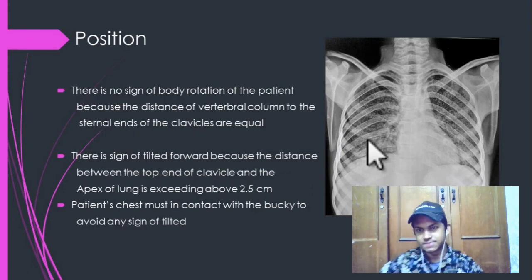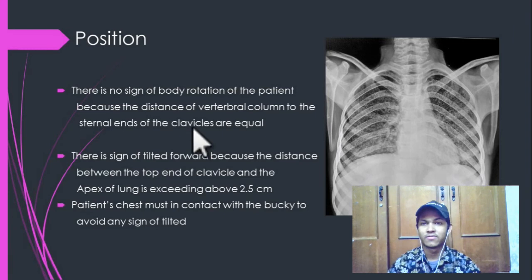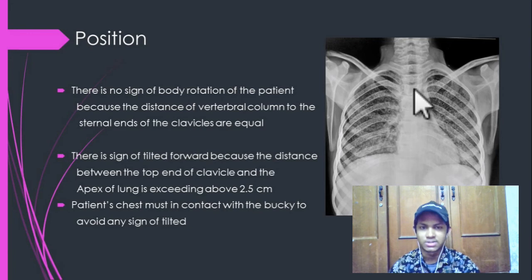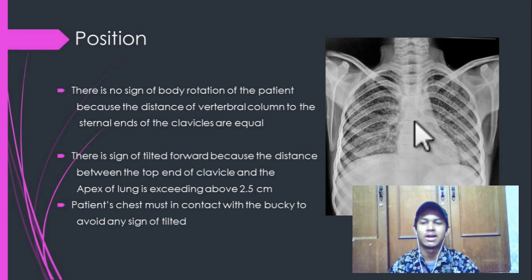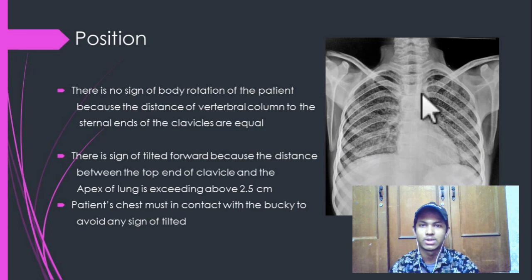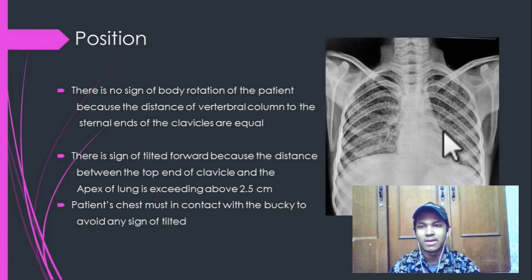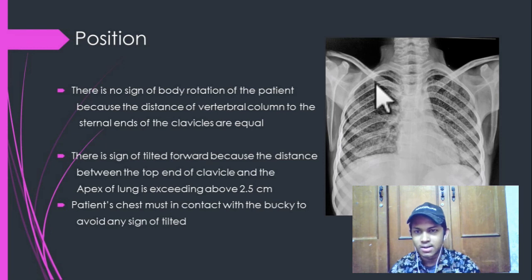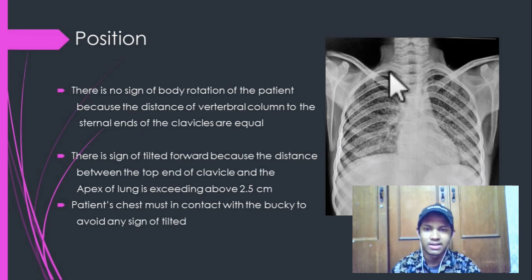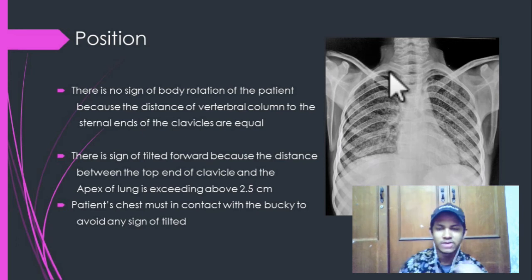For the position, there is a sign of body rotation of the patient, because the distance of the vertebral column to the sternal end of the clavicle are equal — vertebral body and sternal end are equal. Next, there is a sign of tilted forward because the distance between the top of the clavicle and the apex of the lung is exceeding above 2.5 cm, so therefore it is tilted forward.